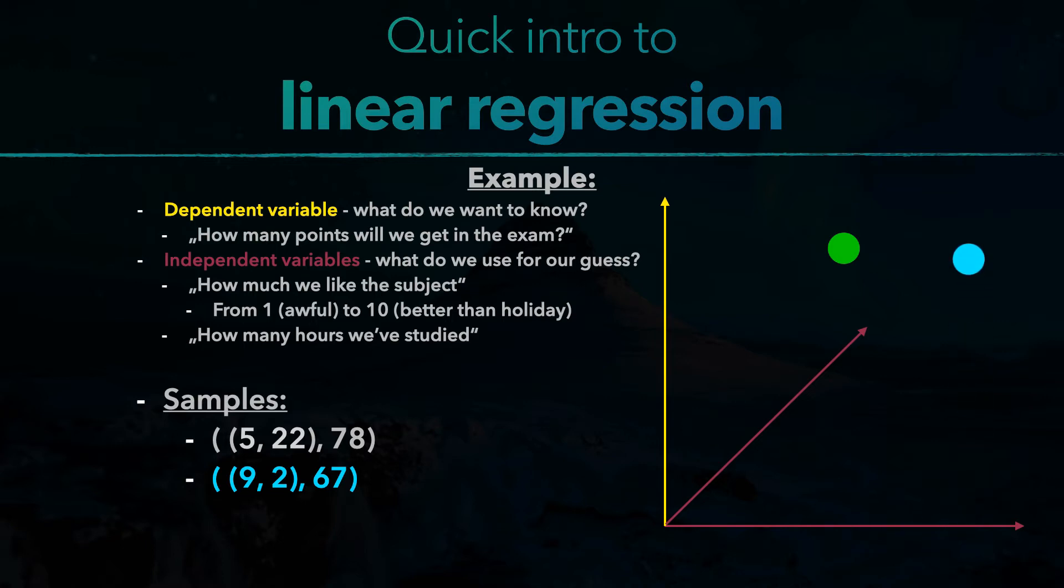And here is our second point. Now what we are trying to get in linear regression is a function that estimates this as good as possible, which in our example could maybe look like this.